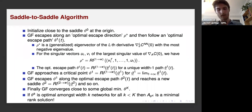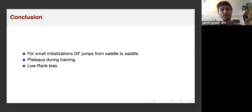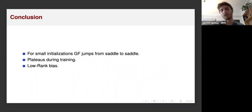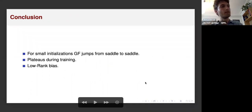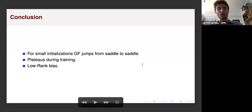To conclude, we showed that with small initialization, gradient flow has a very interesting phenomenon where it jumps from saddle to saddle, which explains the plateaus observed during training and leads to a low-rank bias in the end.